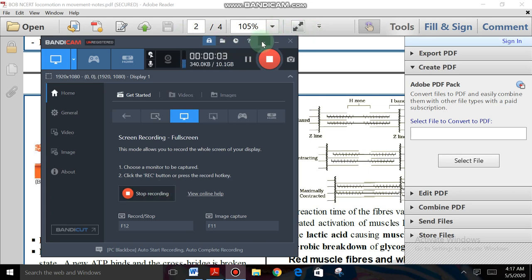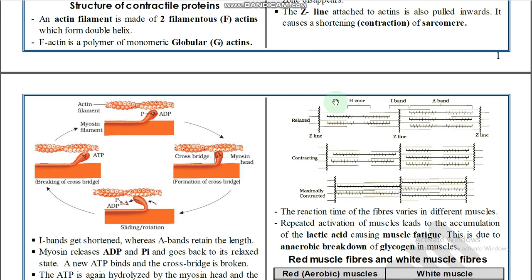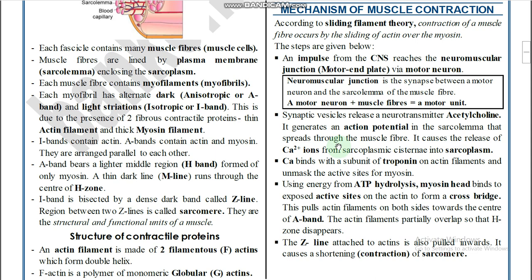In the first step, an impulse from the CNS reaches the neuromuscular junction via a motor neuron. The neuromuscular junction is the synapse between a motor neuron and the sarcolemma of the muscle fiber. A motor neuron plus its muscle fibers is called a motor unit.